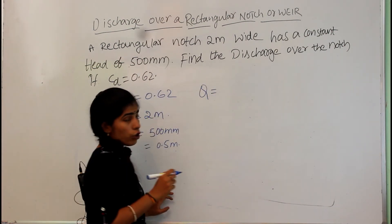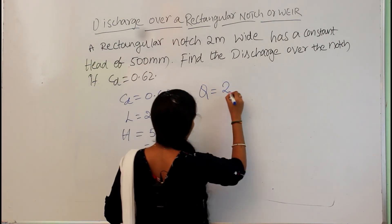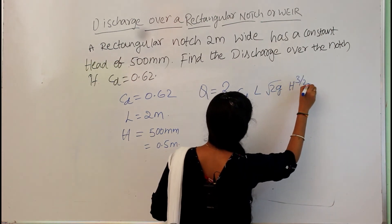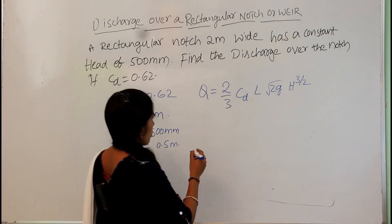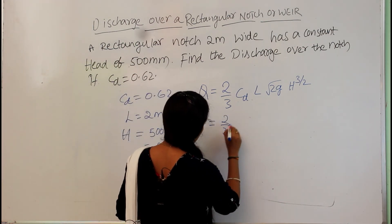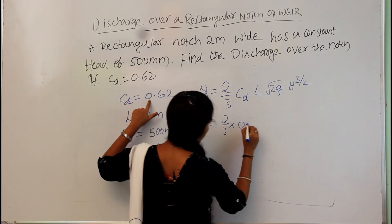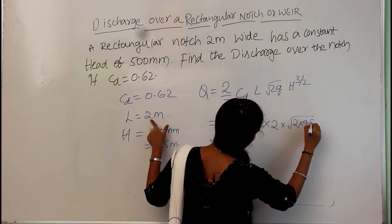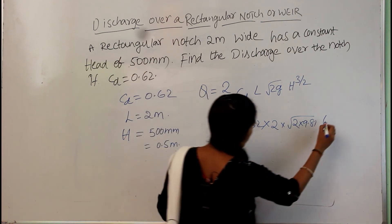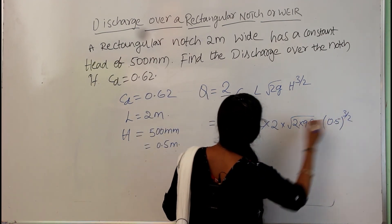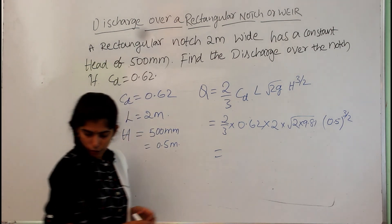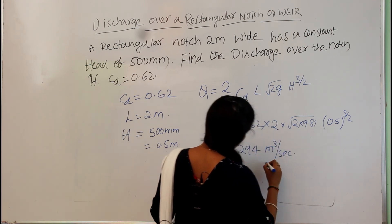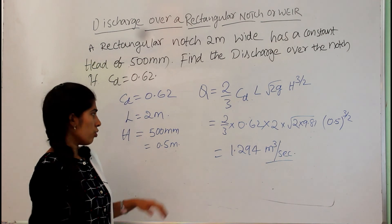We need to find the discharge. The formula is Q = (2/3)·Cd·L·√(2g)·H^(3/2). Substituting the values: Q = (2/3) × 0.62 × 2 × √(2 × 9.81) × (0.5)^(3/2). Solving this gives Q = 1.294 m³/s. The discharge is measured in meters cubed per second.